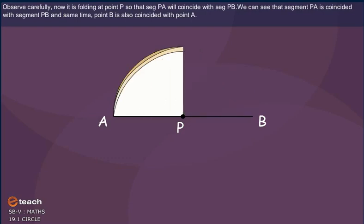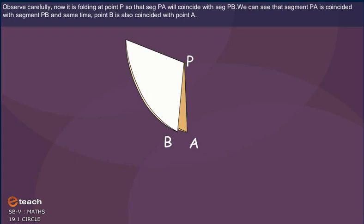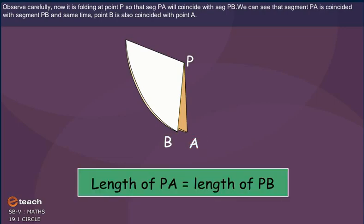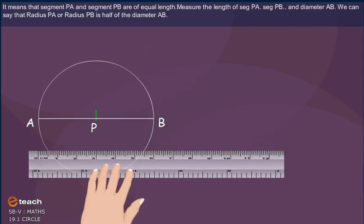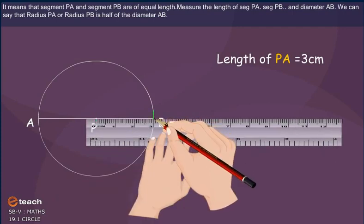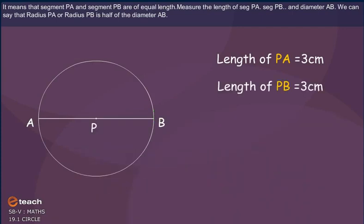Now it is folding at point P so that segment P, A will coincide with segment P, B. We can see that segment P, A is coincided with segment P, B. At the same time, point B is also coincided with point P. It means that segment P, A and segment P, B are of equal length.